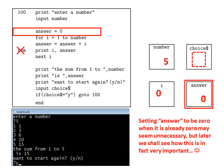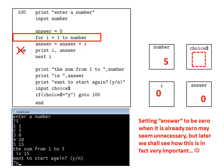Now, setting answer to be zero when it's already zero may seem unnecessary, but later we shall see how this is in fact very important. Then the computer executes the next line: for i equals one to number, which in this case means one to five, because number is five. So it goes to the memory location allocated to the variable i and sets it to one.